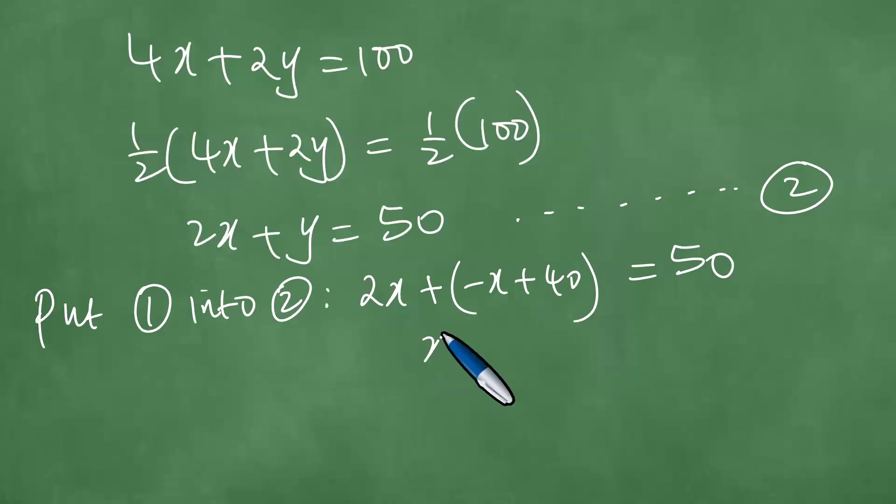And we have 2X minus X, which is exactly X. And X now is equal to 50 minus 40. What is 50 minus 40? It is actually 10.